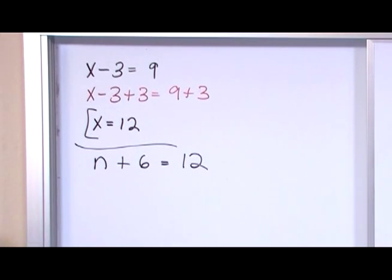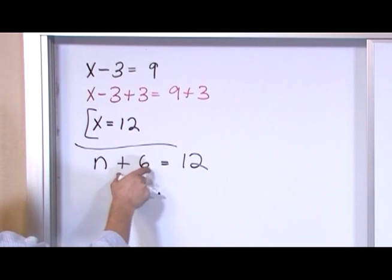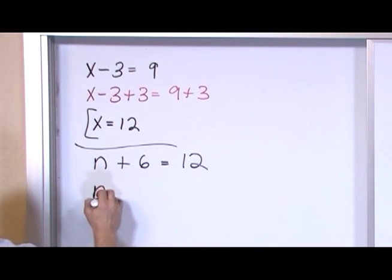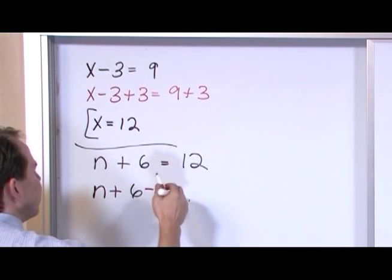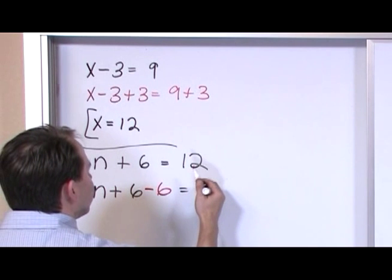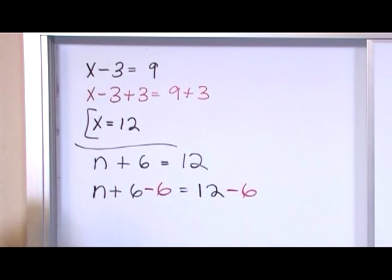What if I have n plus 6 is equal to 12? I have the same kind of thing. I've got n that I want to get by himself, but I've got the 6 in the way. So I rewrite the equation, except I subtract 6 from this side and I subtract 6 from the other side.